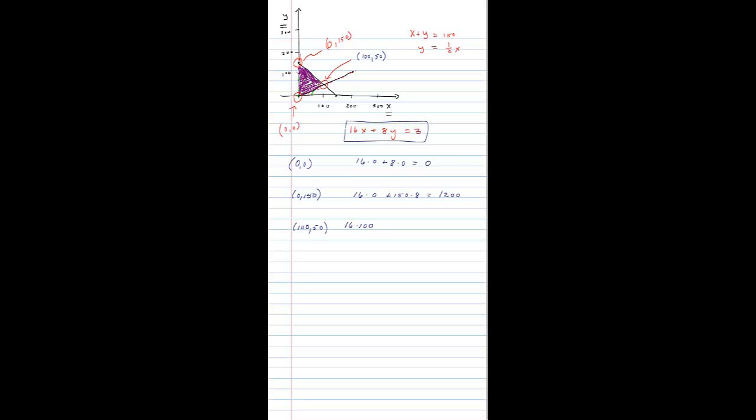So, it looks like to make the most amount of money, I'm going to sell 100 adult tickets and 50 student tickets.